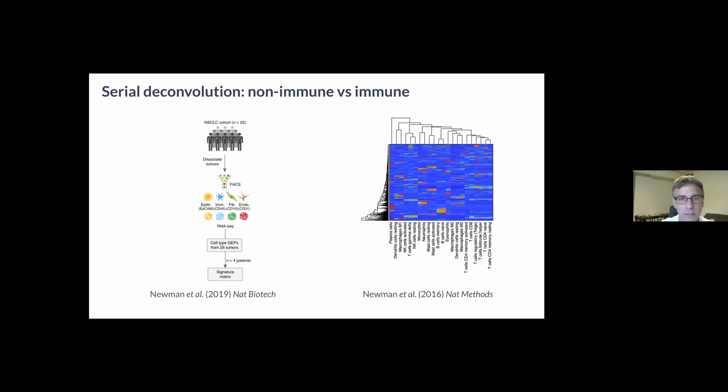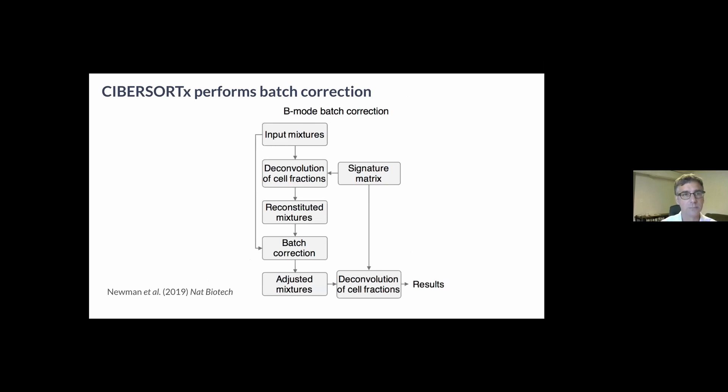In the second step we further deconvolve that immune component into 22 populations that are represented in the LM22 matrix. This is the same matrix that's used in CIBERSORT and it was published in their original 2015 manuscript.